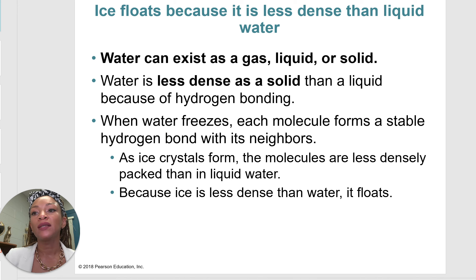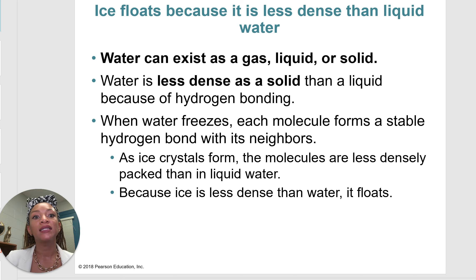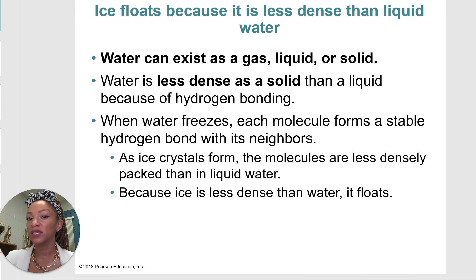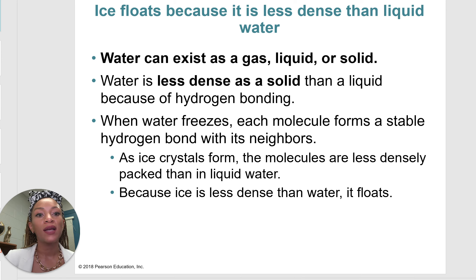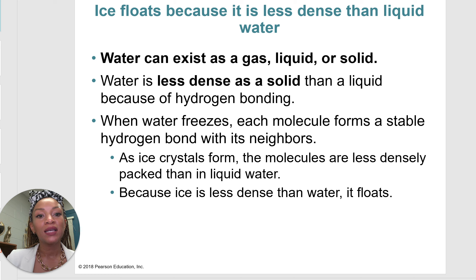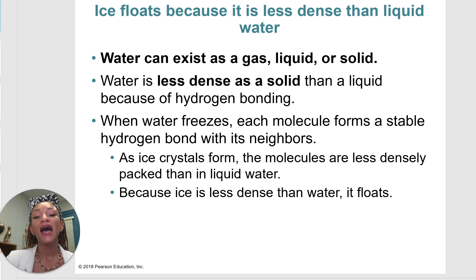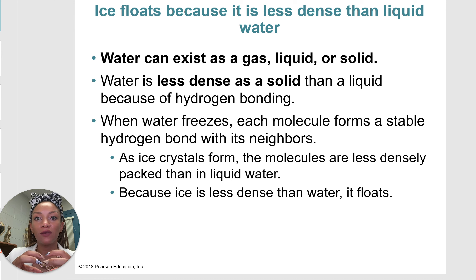Another example of water's properties is that ice floats because it is less dense than liquid water. Water can exist as a gas — steam — a liquid like a glass of water, or a solid — ice. Ice is less dense because of hydrogen bonding. When water freezes, each molecule forms something called a crystal lattice, and as those ice crystals form, the molecules are less densely packed and kind of separate away from each other, making them less dense.